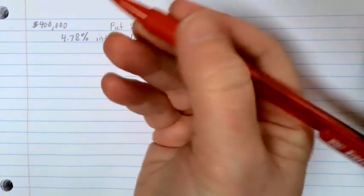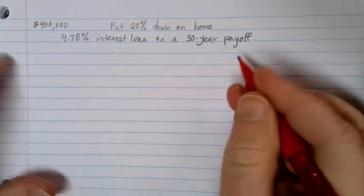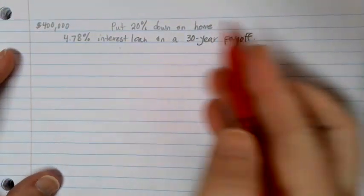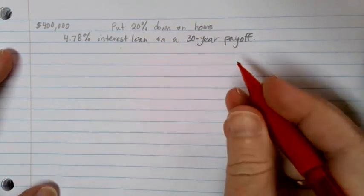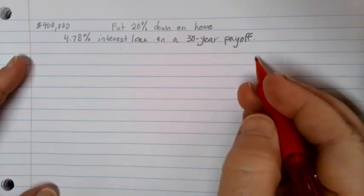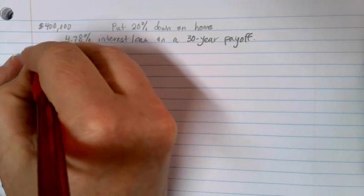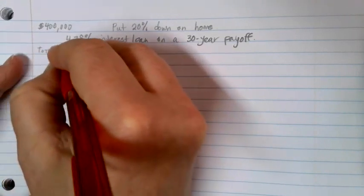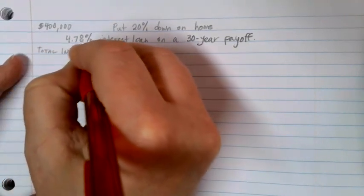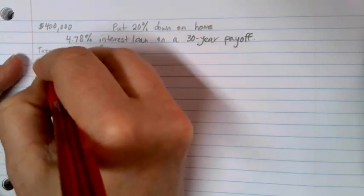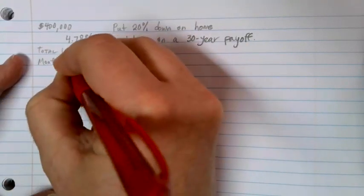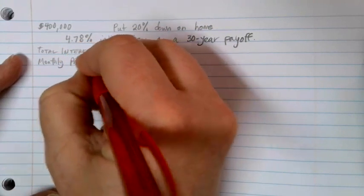My question, first of all, is I'd like to figure out how much interest I'm going to end up paying for this loan over time. The first thing you're going to have to do is figure out what your monthly payment is going to be. So let's go through and do that. To figure out the monthly payment, we're going to need to use our loan formula.